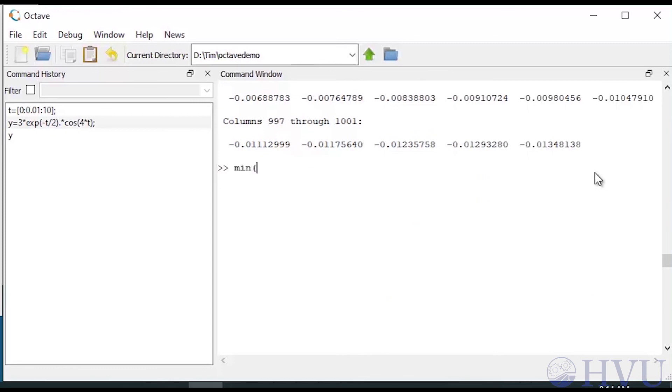So to return the minimum value of y, type min of y. The maximum value is returned by max of y. But these numbers don't really give me much of a feeling for what the overall function's doing.